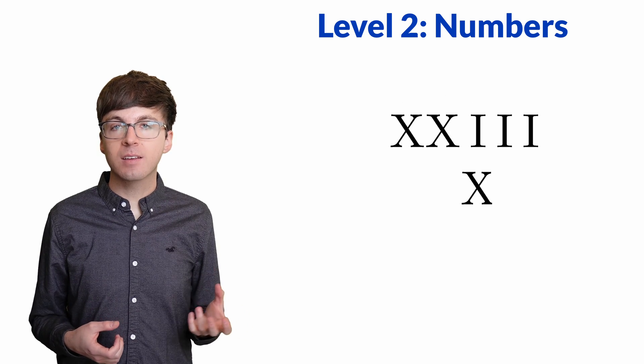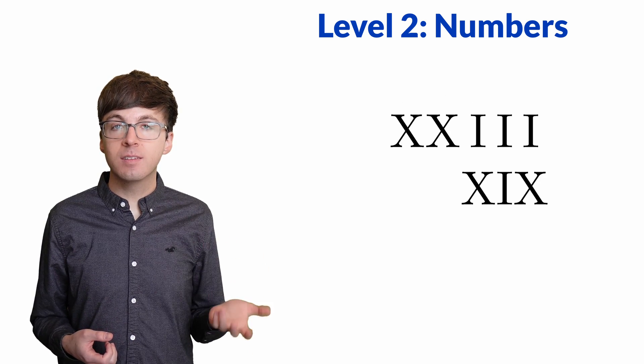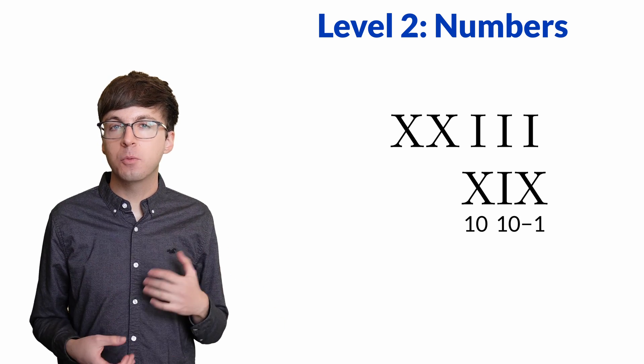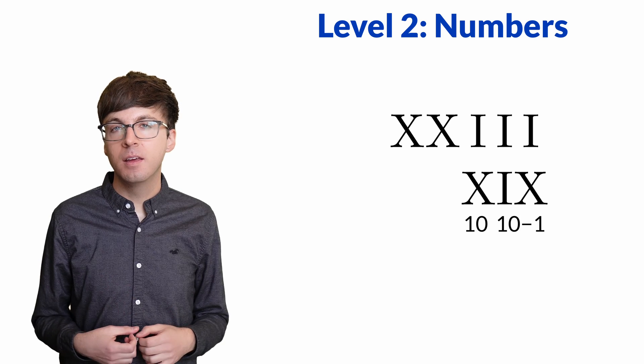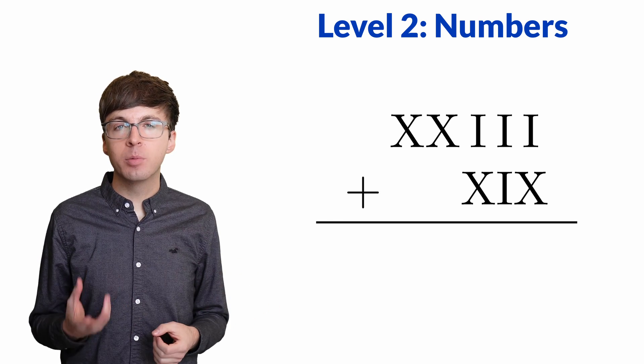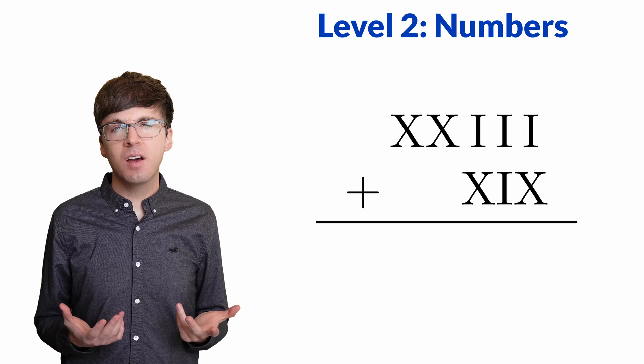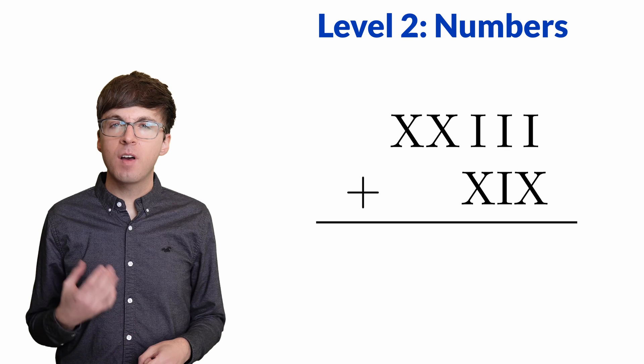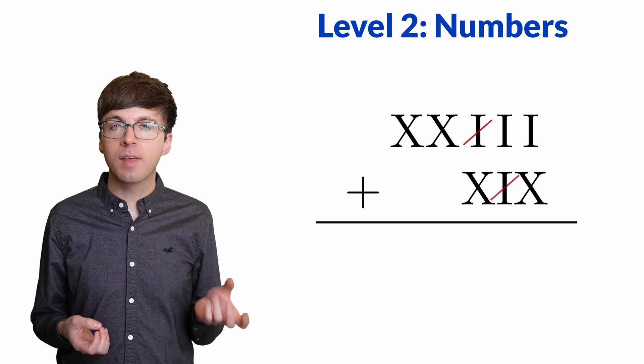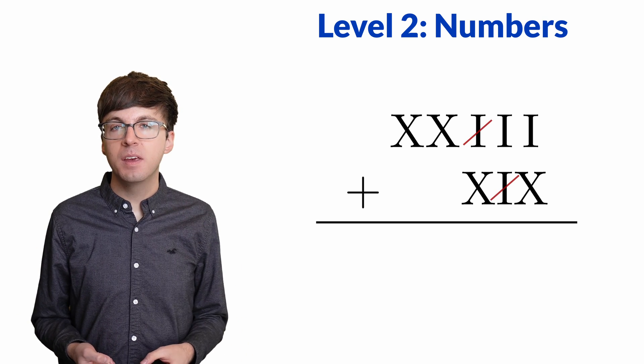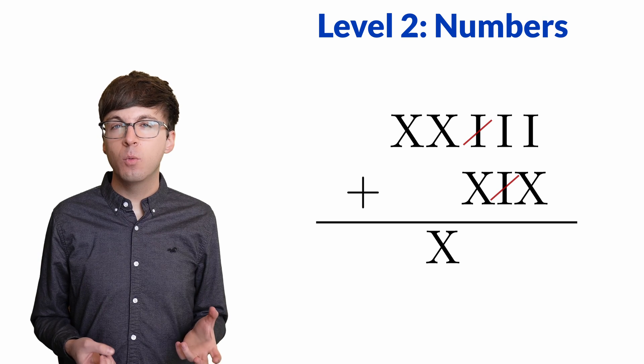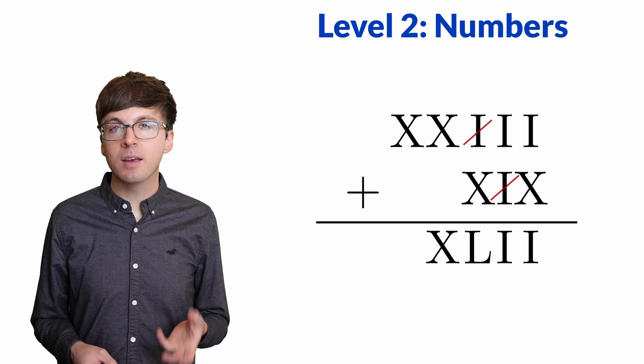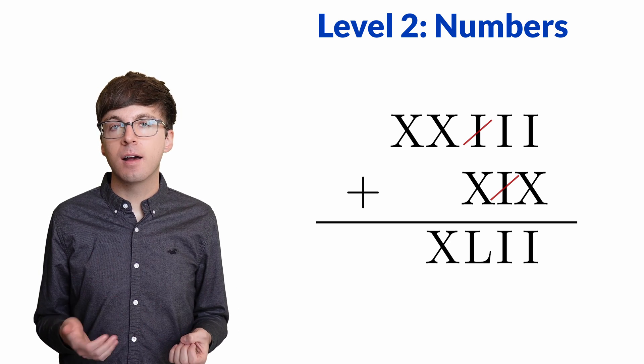19 is written as XIX. The first X is 10, and then since there's an I to the left of an X, that means to subtract. So we have 10 minus 1 is 9. Now what if we want to add 23 plus 19? This is a bit tough since this is a non-positional number system, but it can be done. One of the I's on the right can cancel with that I on the left of the X. Then there's 4 X's, which we have to write as XL. That's 10 less than 50. And then there's two I's left, so we have XLII.